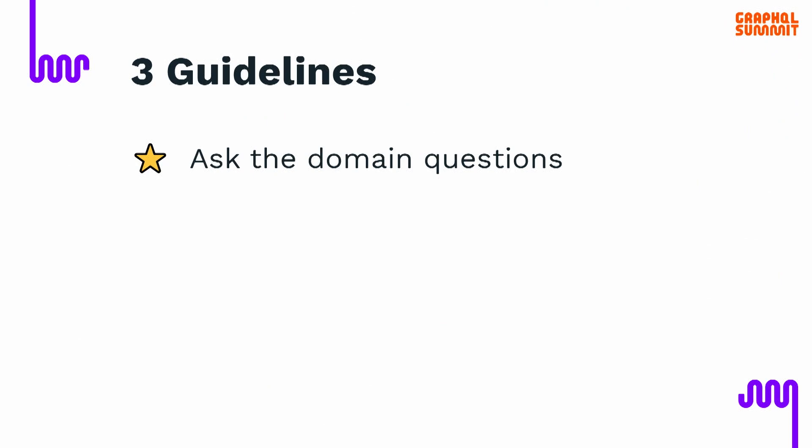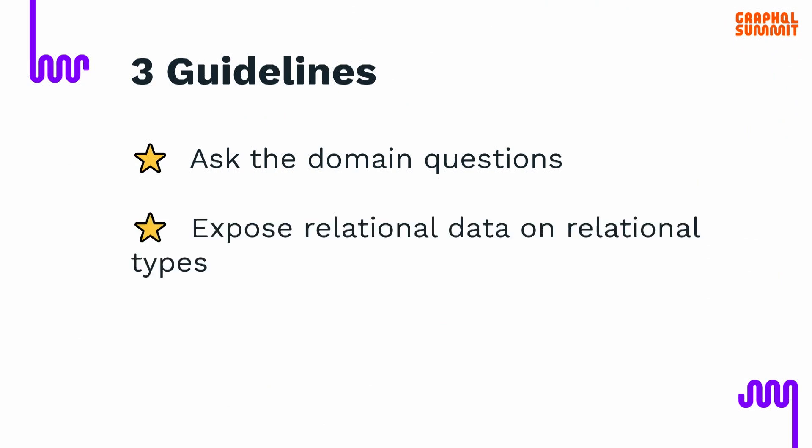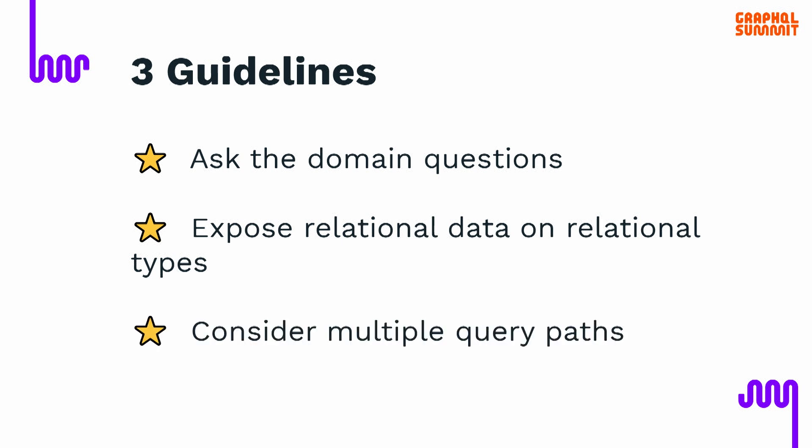Our product is literally a client management tool for accountants, so we had a lot of relational data for accountants, their clients, their clients' employees. We know firsthand how much a flawed schema can slow down feature development and even make it easy to introduce bugs. So we've come up with some guidelines that help us build a better schema from the start: ask the domain questions, expose relational data on relational types, and consider multiple query paths.